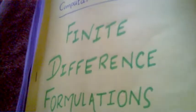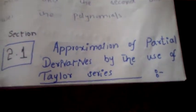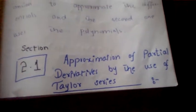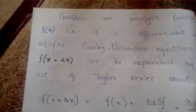Therefore partial derivatives must be converted into finite differences so that computers can easily process those differences. As a first lecture, we are learning how to approximate partial derivatives using the Taylor series. Taylor series is taught in very initial courses of calculus, and the reader must be familiar with it.